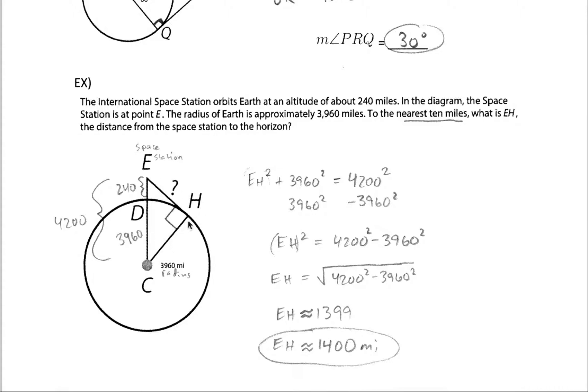So again knowing the radius here, that also means that segment CD here is also a radius so it must have the exact same measure. And then we know our altitude up to our space station from the surface of our earth or circle here is 240 miles.